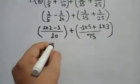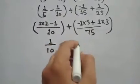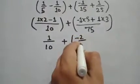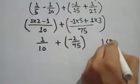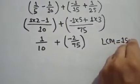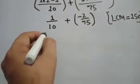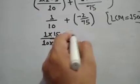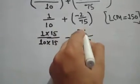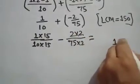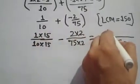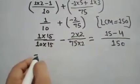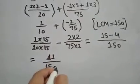Now 2 minus 1 equals 1/10, plus minus 5 plus 3 equals minus 2/75. The LCM of 10 and 75 is 150. Then 1/10 times 15 plus minus 2/75 times 2. 150 is the LCM, and 15 minus 4 equals 11. So 11/150 will be the solution of this question.